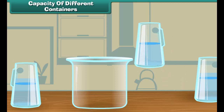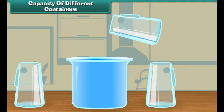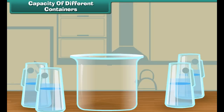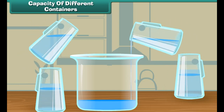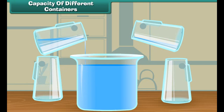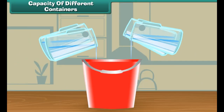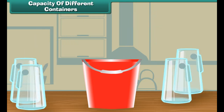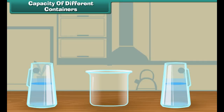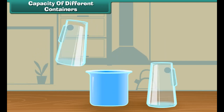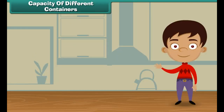We have three different vessels and a jug. We will fill water from the jug into these three vessels. Let us start with the first vessel: one, two, and three. Three jugs of water fill the first vessel. Now let us fill the second vessel: one, two, three, and four. The bucket is full. Here, four jugs of water fill this bucket.